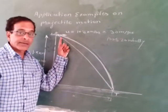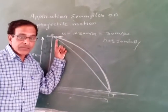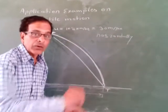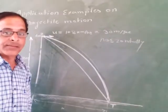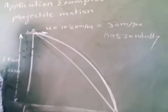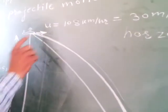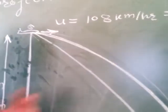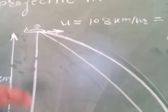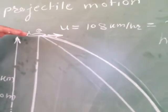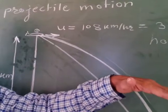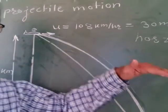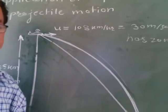The fighter plane is moving horizontally. Therefore, whatever bomb is released will also have horizontal projection.